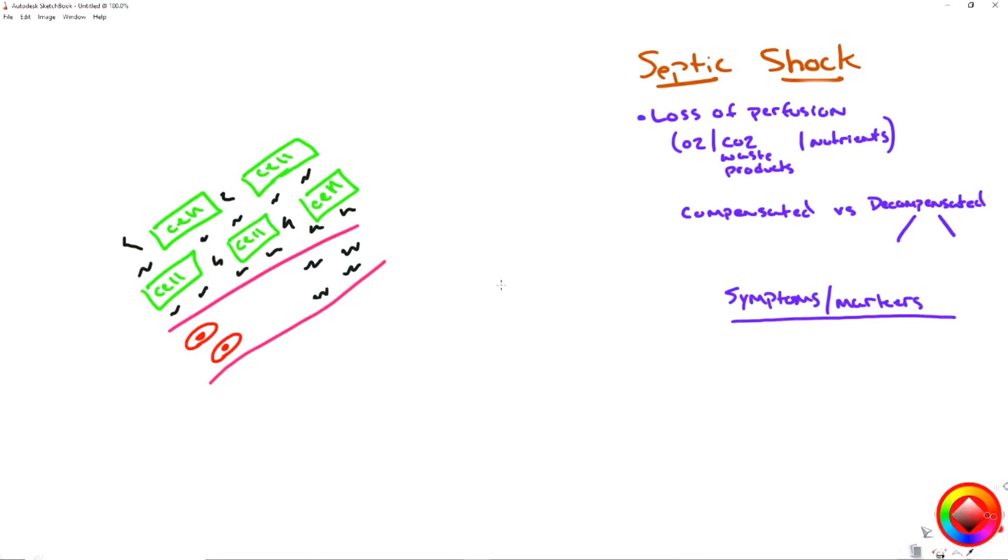All right guys, now that we're on the computer, I want to first go over shock, right? Very quickly. Loss of perfusion. Shock is hypoperfusion. So if oxygen, CO2 or waste products and nutrients are not getting to or from the cell, we have a loss of perfusion or hypoperfusion. So that's a shock state. It can be compensated or it could be decompensated. We're going to talk about that in a short little bit here. And then remember, we're going to talk all about our symptoms and our markers as we draw on this little drawing here on the left.